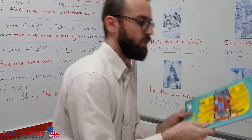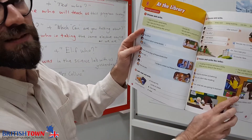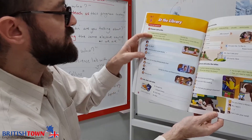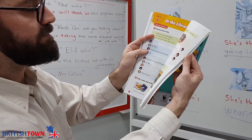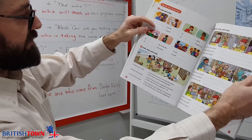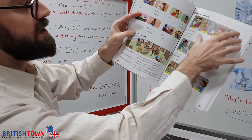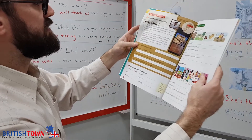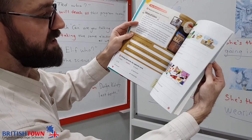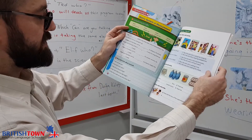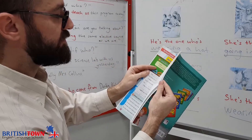Now the workbook: again Unit 8, 'At the Library,' starting page 54 — dialogue completion exercises continuing through page 55 and 56. On page 56: writing sentences about friends, 'Which one is Sarah? Which one is...?' Page 59: a grammar review activity, and a final metric system activity to finish the week.